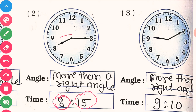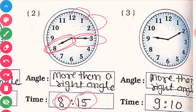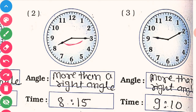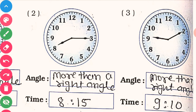So the time is 8:15. Now the angle between the hands — you can see the angle between the two hands is more than a right angle. So write here: more than a right angle.